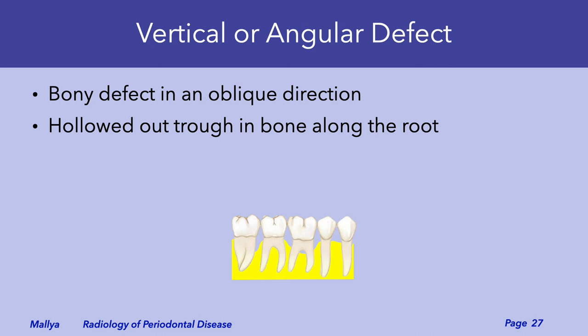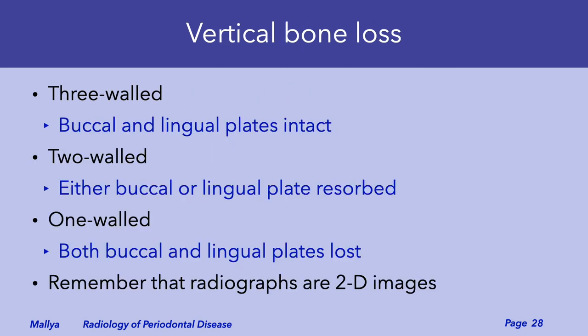In vertical bone loss, the bony defect is in an oblique direction, creating a trough in the bone adjacent to the root. Depending on the extent of the bone loss, vertical bone loss is often categorized as one, two, or three wall defects.